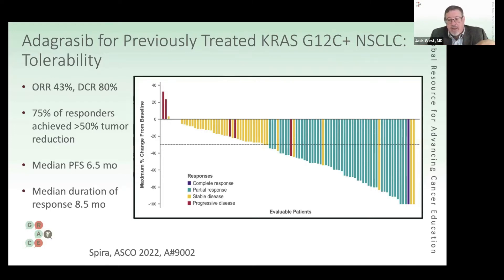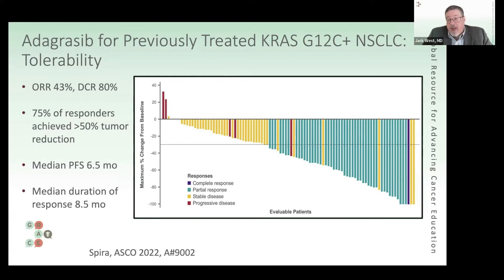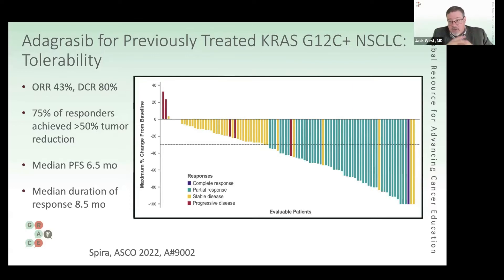In this waterfall plot, the horizontal line at zero means no change in the size of measurable disease. When bars go down, each bar represents an individual patient's outcome — the depth of the downward direction indicates how much shrinkage there was. If bars go up, that represents a patient where the disease increased. The vast majority of people who got this therapy had some tumor shrinkage.